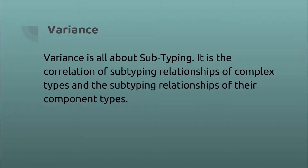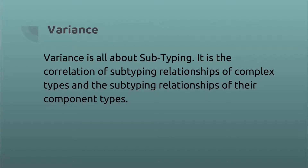So let us now start. Variance is all about subtyping — it is the correlation of subtyping relationships of complex types and the subtyping relationships of their component types. Variance makes Scala collections more type safe and also allows us to make more intuitive connections between complex types and their related component types.